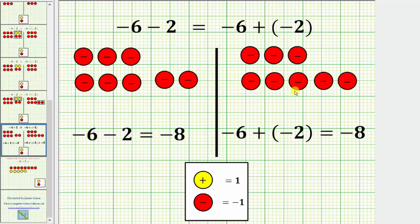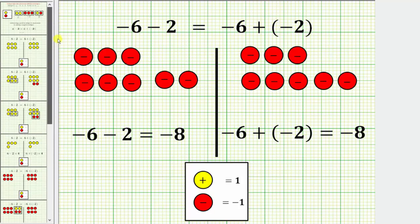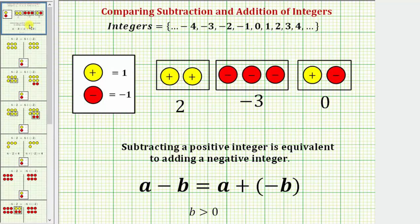We're left with eight negative chips, which means negative six minus two equals negative eight, and negative six plus negative two also equals negative eight. So these two examples show that a minus b is equivalent to a plus negative b. I hope you found this helpful.